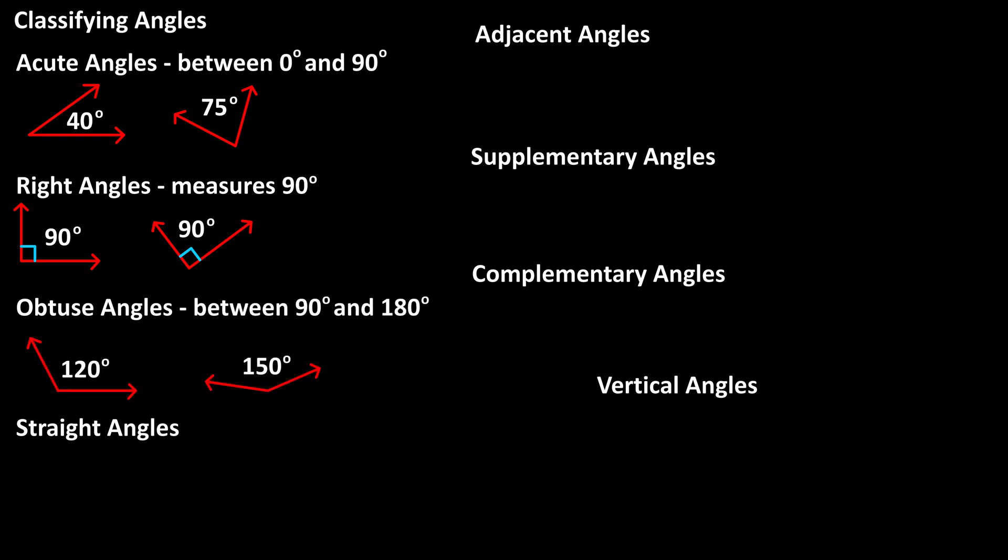An obtuse angle is an angle that's measurement is between 90 degrees and 180 degrees. A straight angle is an angle that measures 180 degrees, so it is a straight line.